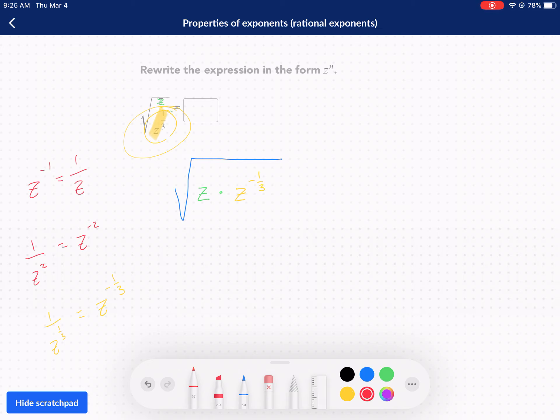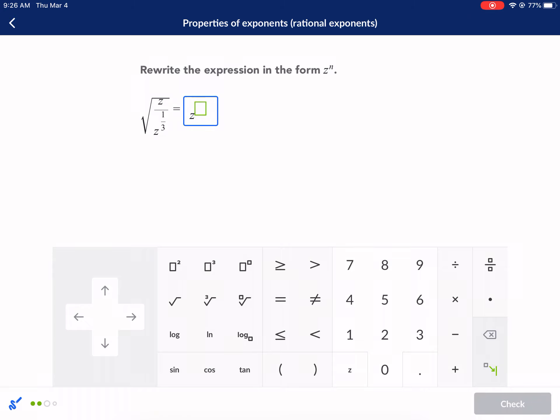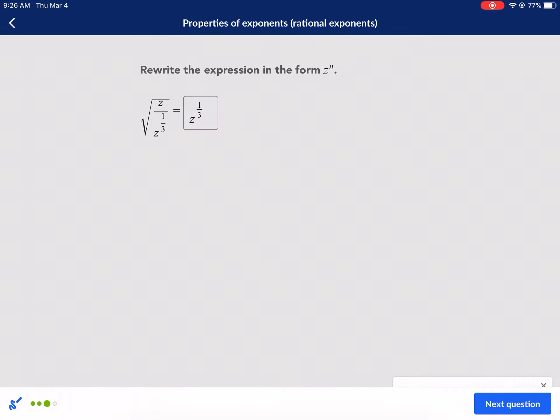Now I'm going to leave my square root at the end. And I had a z already inside this top. Z times z to the negative one-third. Now we have multiplying like bases. We are going to add exponents. So we're going to have z to the one, and then we're adding a negative one over third. One is the same thing as three over three plus a negative one-third. That gives us two over three. So z to the two-thirds. Now we need to convert this square root into an exponent. That's one over two. Exponent raised to an exponent. We're going to multiply exponents. Two-thirds times one over two. We can cross cancel and we get z to the one-third power. Check it.